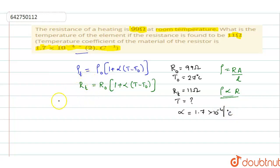Now, substituting all these values here, R T is 11 which is equal to R 0 is 99 into 1 plus 1.7 into 10 power minus 4 into T, the value which you have to find it out. So, we shall write that T as it is minus 27.